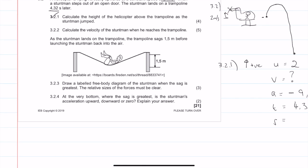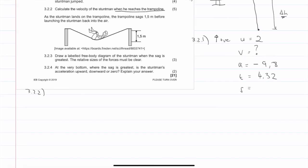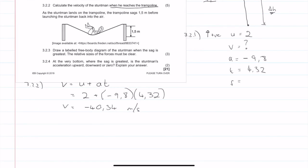Question 3.2.2, calculate the velocity of the stuntman when he reaches the trampoline. Let's see what equation can we use. The simplest one would be V equals U plus AT. So I'll use 2 plus acceleration of minus 9.8 times time of 4.32, and we get our velocity is equal to minus 40.34 meters per second. So what does that negative sign indicate? It just means he's moving downwards. So our velocity is equal to 40.34 meters per second down.